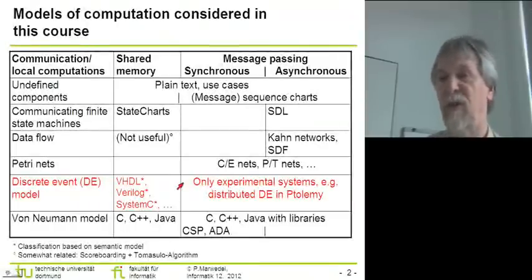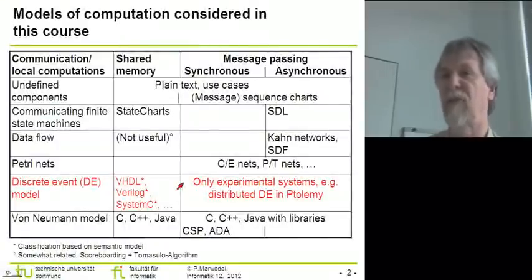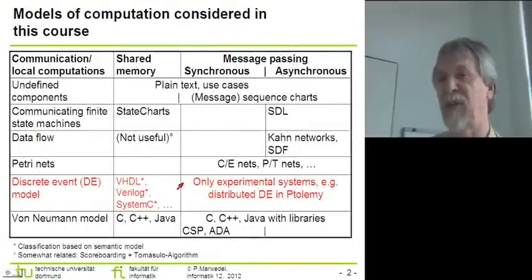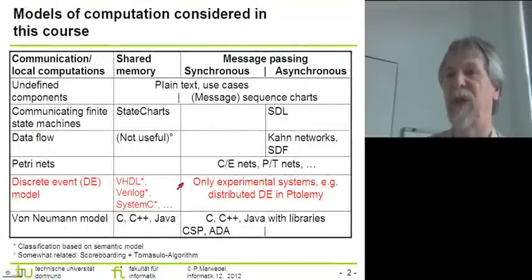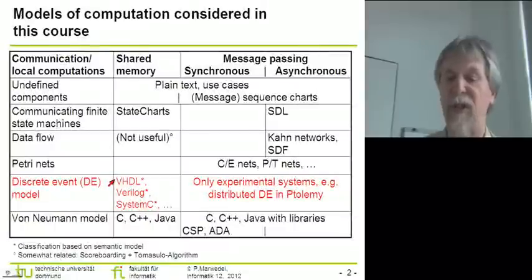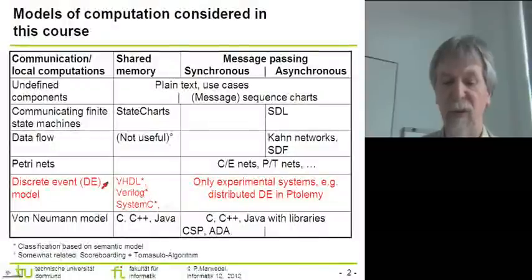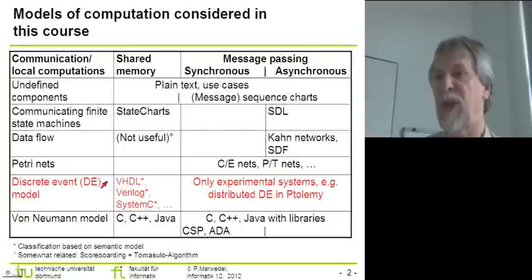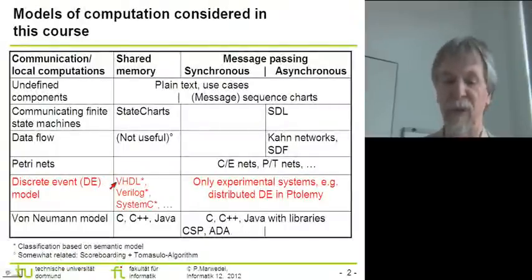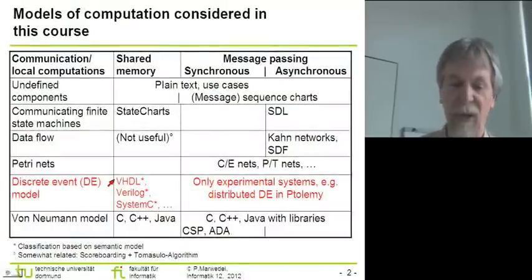Distributed implementations, though feasible, are typically very inefficient — the speedup doesn't really scale with the number of processes available. Typically the speedup is much less than the number of processes. So I'm linking these languages to a shared memory-based implementation, even though it would be possible to add message passing as part of the model, for example in VHDL. It's not that easy to classify these languages with respect to the correct columns.